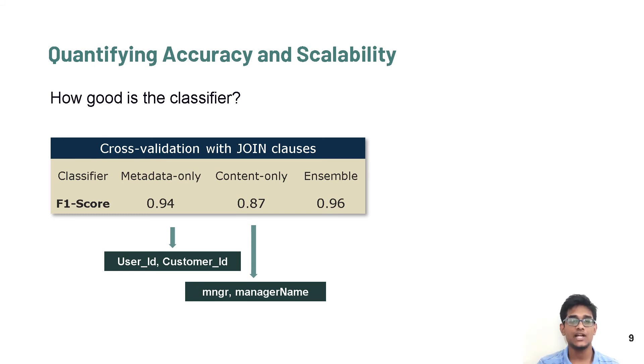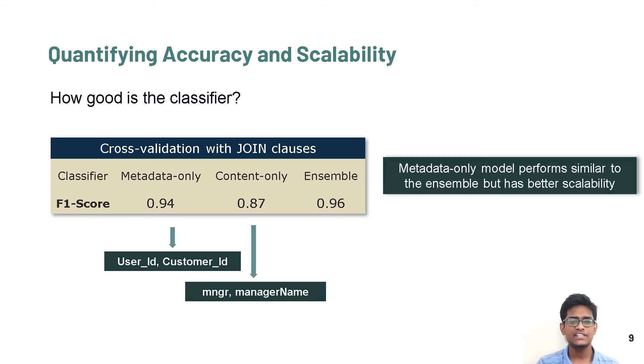A column pair MNGR and manager name has a low column name similarity as MNGR does not exist in the vocabulary of our pre-trained embeddings, but it has a high jacquard because of many common values existing between these two columns. We see that the metadata features work well, with data features improving the F1 score marginally, but a metadata-only model is easier to scale as it does not require reading any of the data streams.